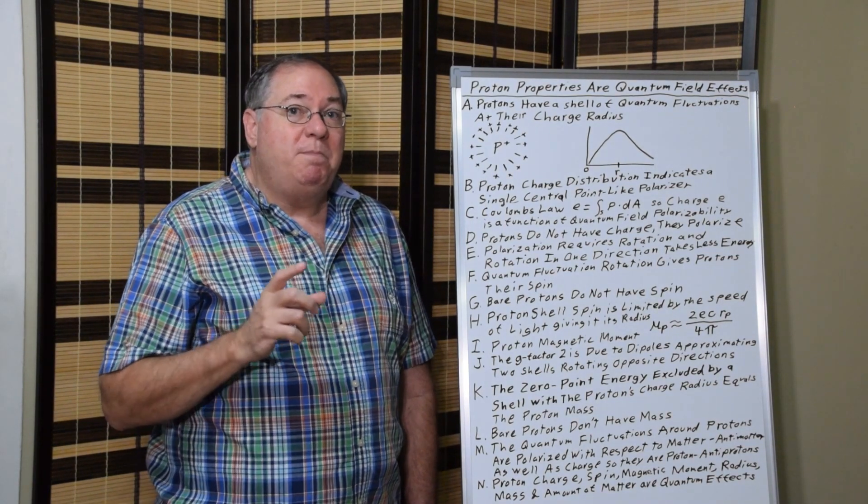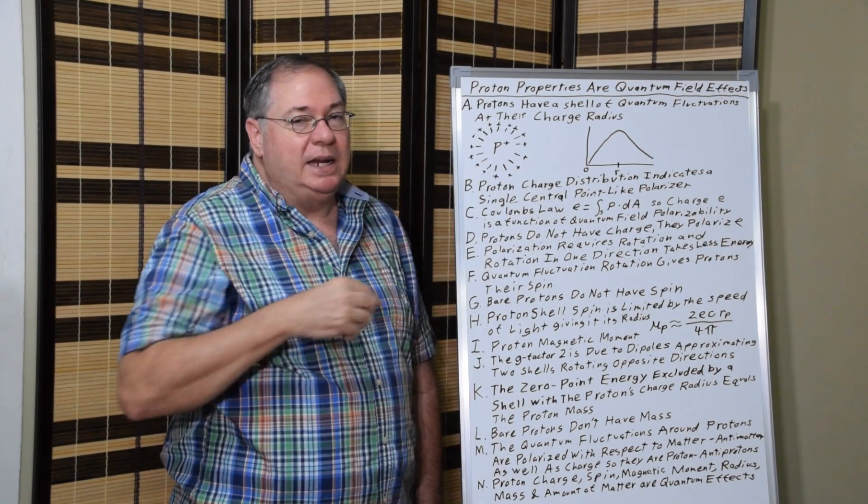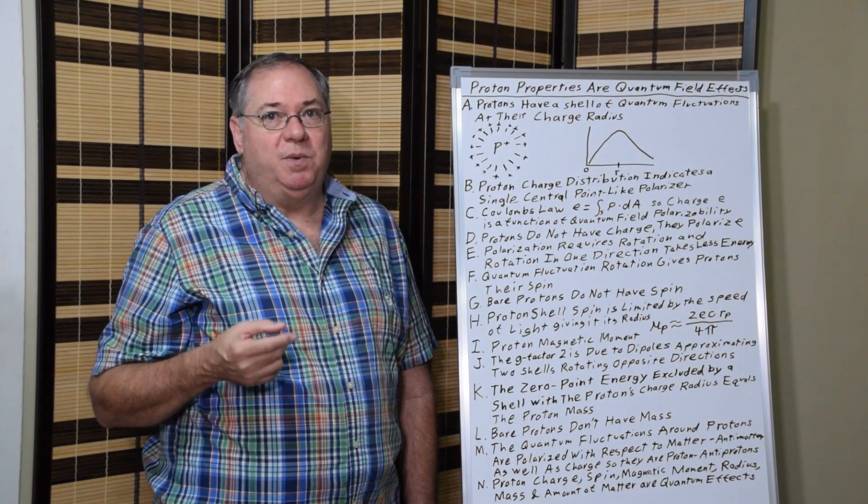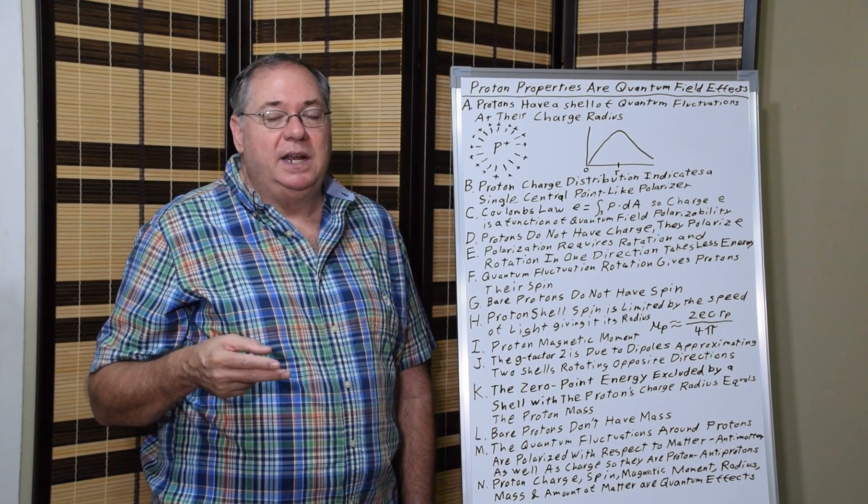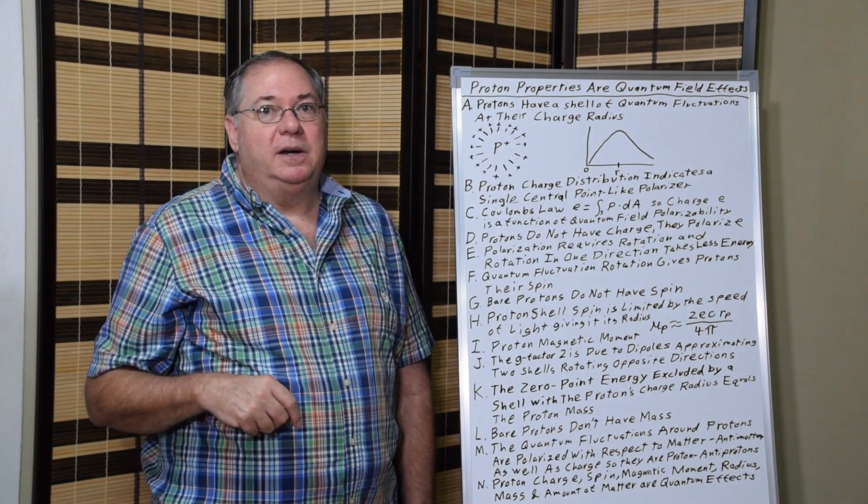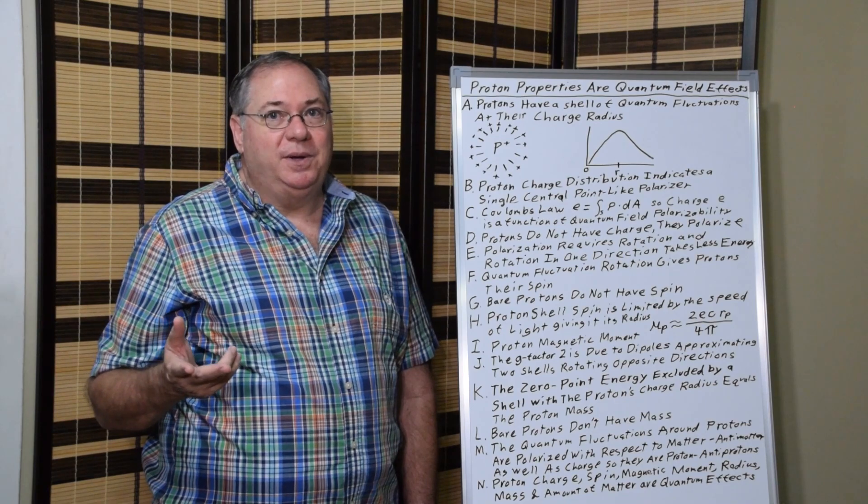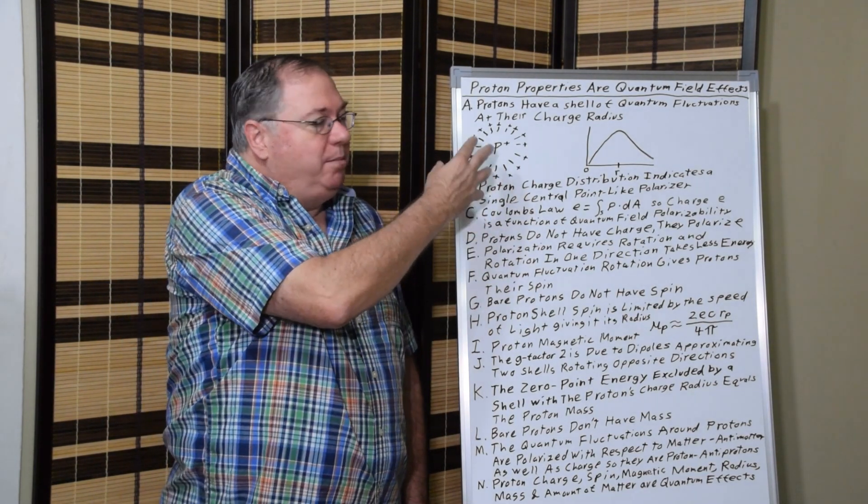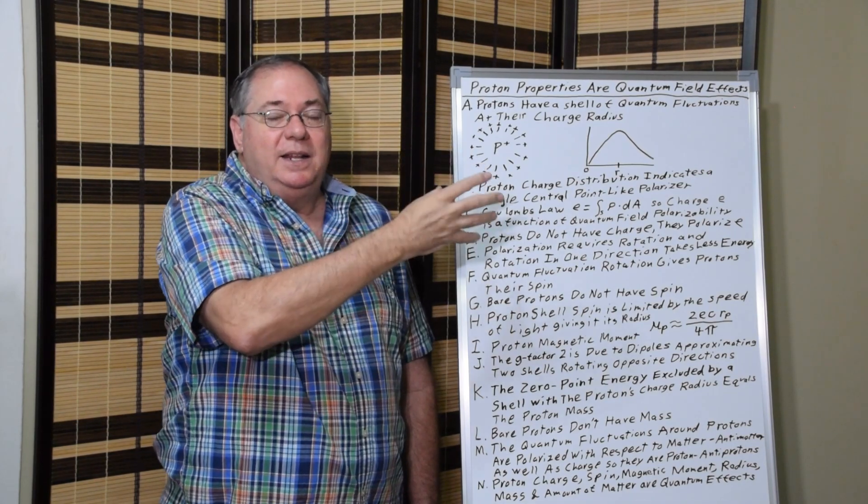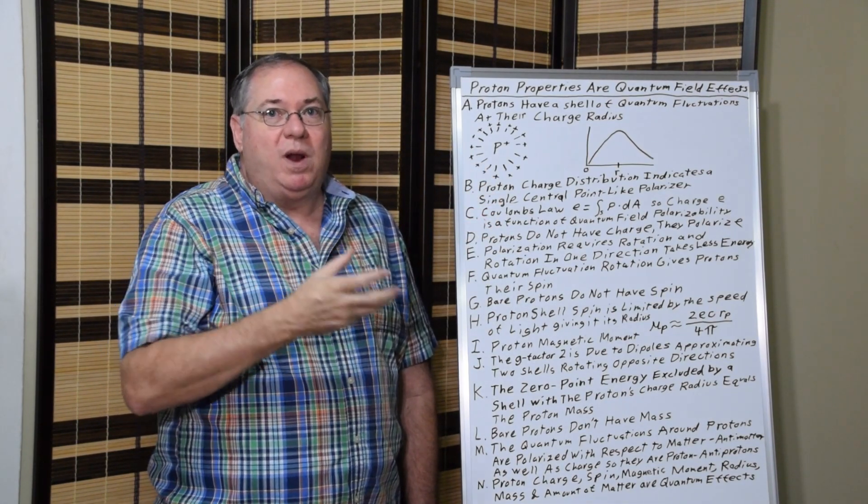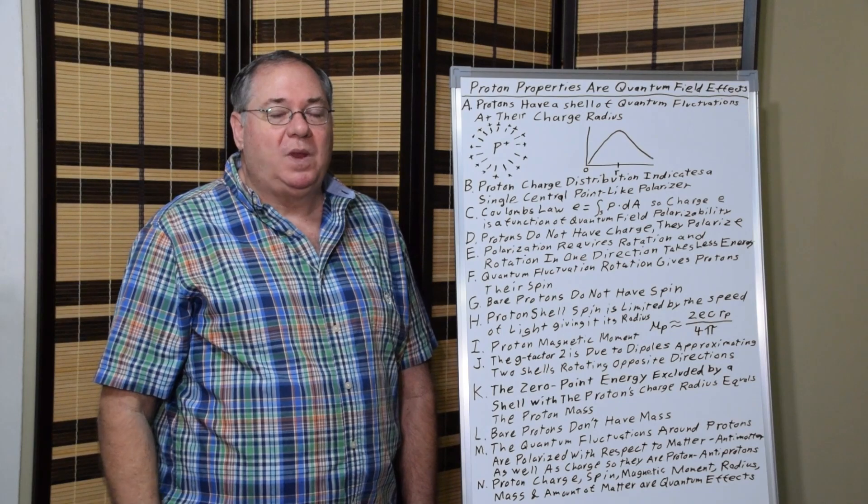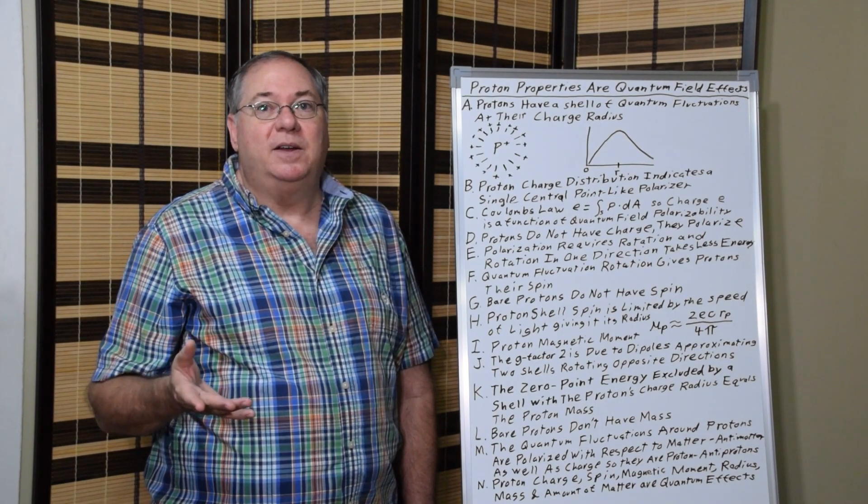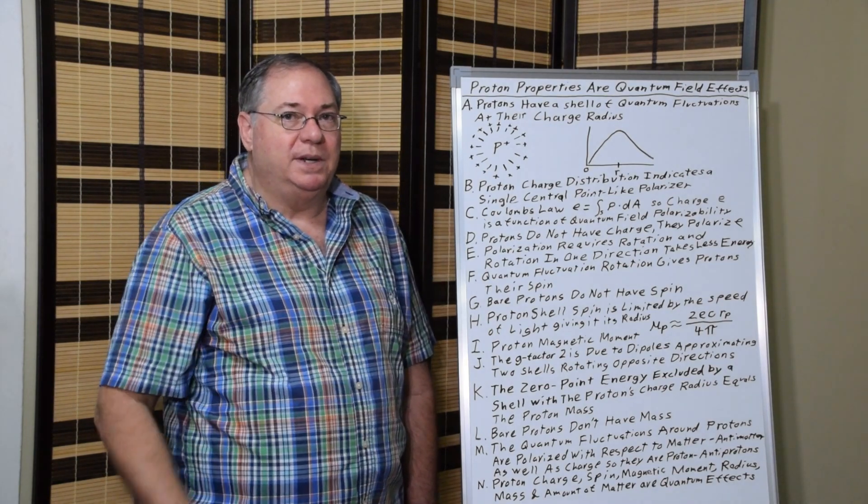And all the bare proton in the middle has to do is polarize those quantum fluctuations with respect to electric charge and matter and antimatter polarity. That's all there is to it. Once you have a free bare proton in the quantum field, the quantum field does the rest. There's no need to have anything else in order to account for the properties of the quantum field.